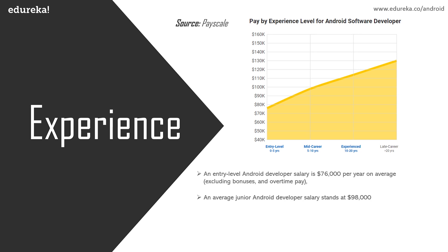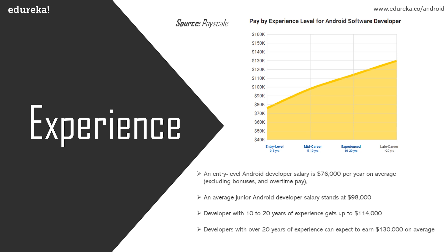On average, a junior Android developer salary stands at 98,000 US dollars, whereas a senior Android developer salary is highly determined by years of experience. The average total compensation for an Android developer with 10 to 20 years of experience amounts to 114,000 dollars, and a developer with more than 20 years of experience can expect to earn at least 130,000 US dollars on average. People with more than 20 years of experience can potentially earn even more.